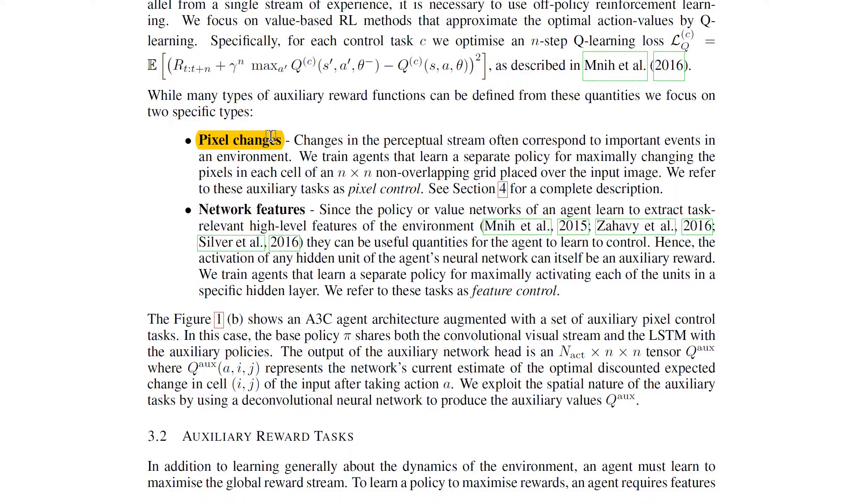So it will learn to move around, not move against the wall, because if it moves against the wall, the pixels won't change. It will learn to move as a regular human agent would also move, not into a wall, not into a dead end, such that the pixels always change. Of course it's not perfect. You can also change your pixels quite a bit by simply spinning around in a circle.